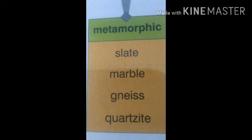The third type of rock on the basis of formation is metamorphic rocks. These rocks are formed by the process of metamorphosis, which means the change in form. These rocks are formed from igneous rocks or sedimentary rocks which undergo different heat and pressure, bringing changes in their structure and composition.